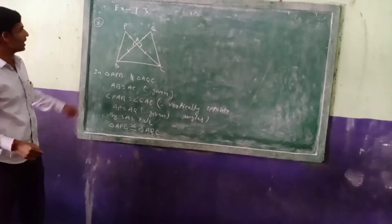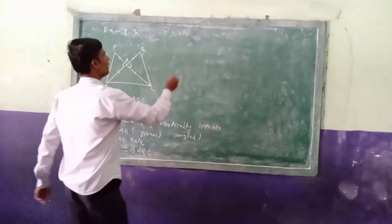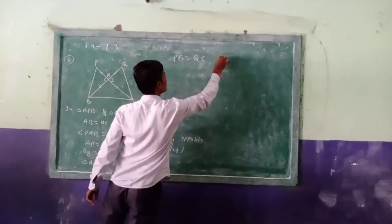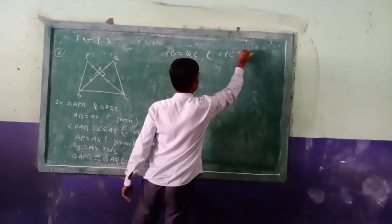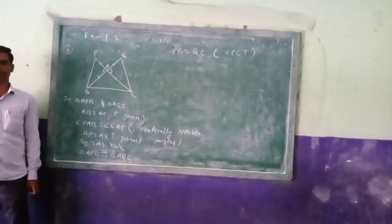Based on that, we have to write here: PB equal to QC. What is the result? CPCTC - Corresponding parts of congruent triangles.